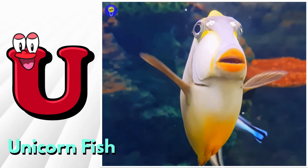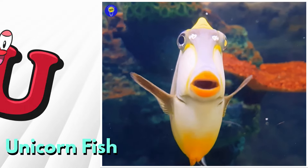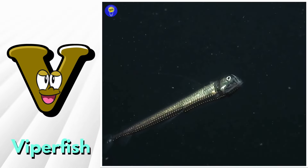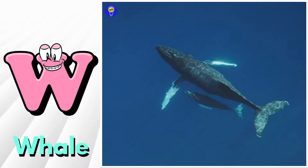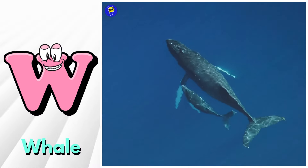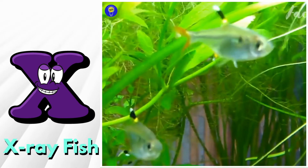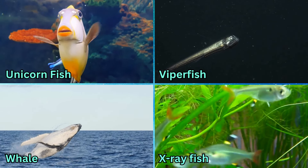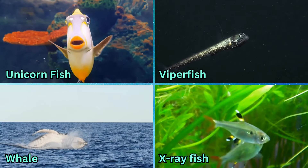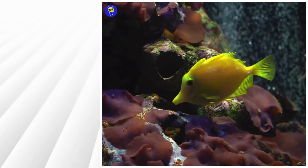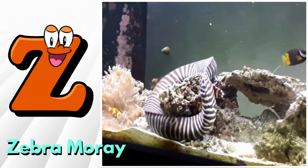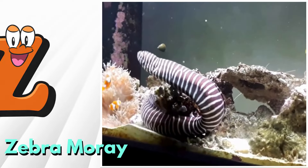U is for unicornfish. V is for viperfish. W is for whale. X is for x-ray fish. Y is for yellow boxfish. Z is for zebra moray.